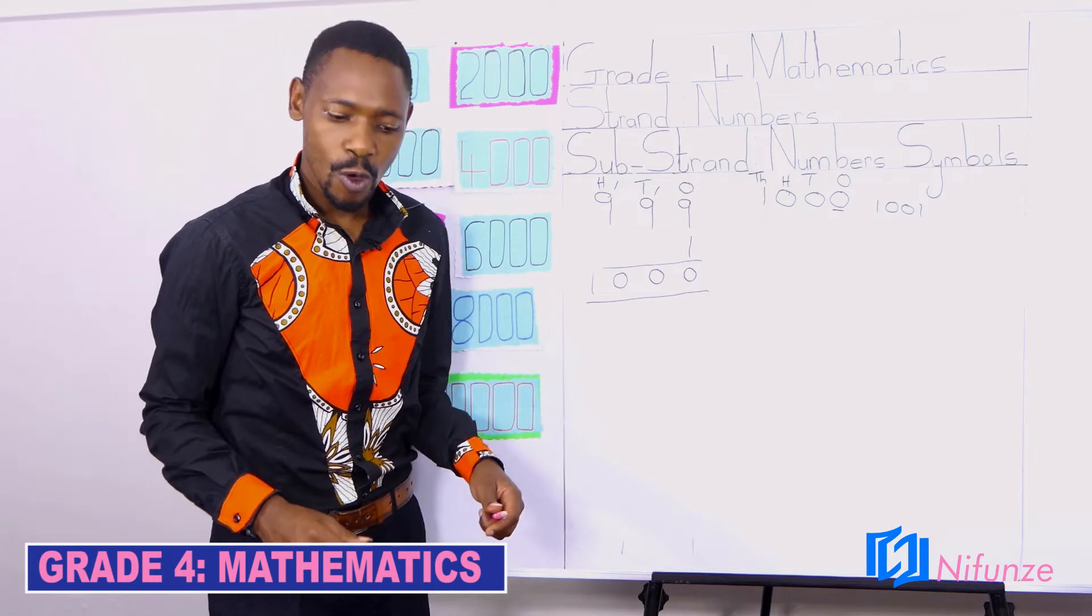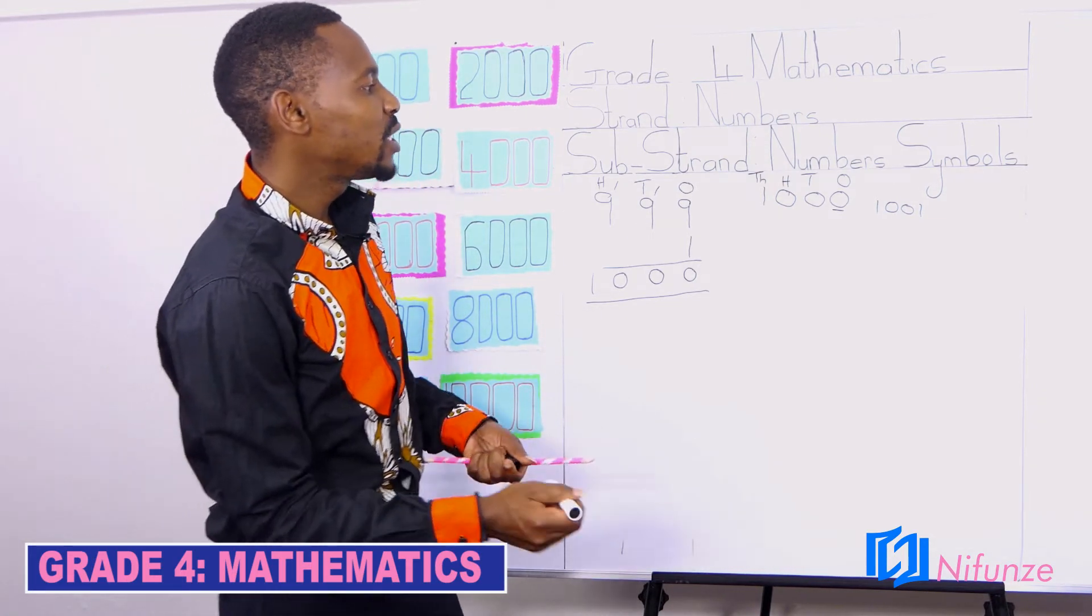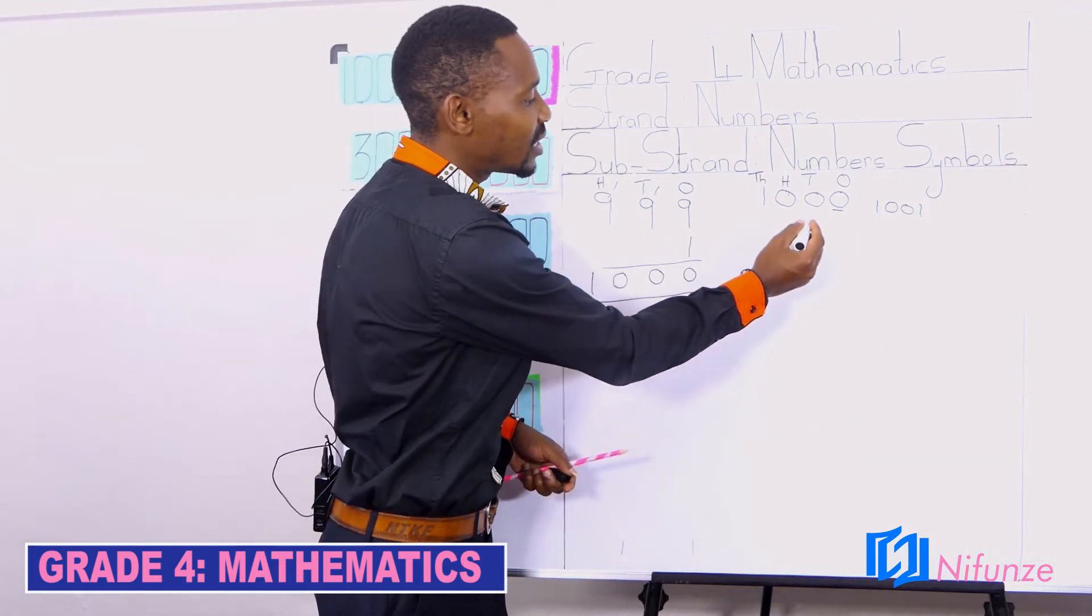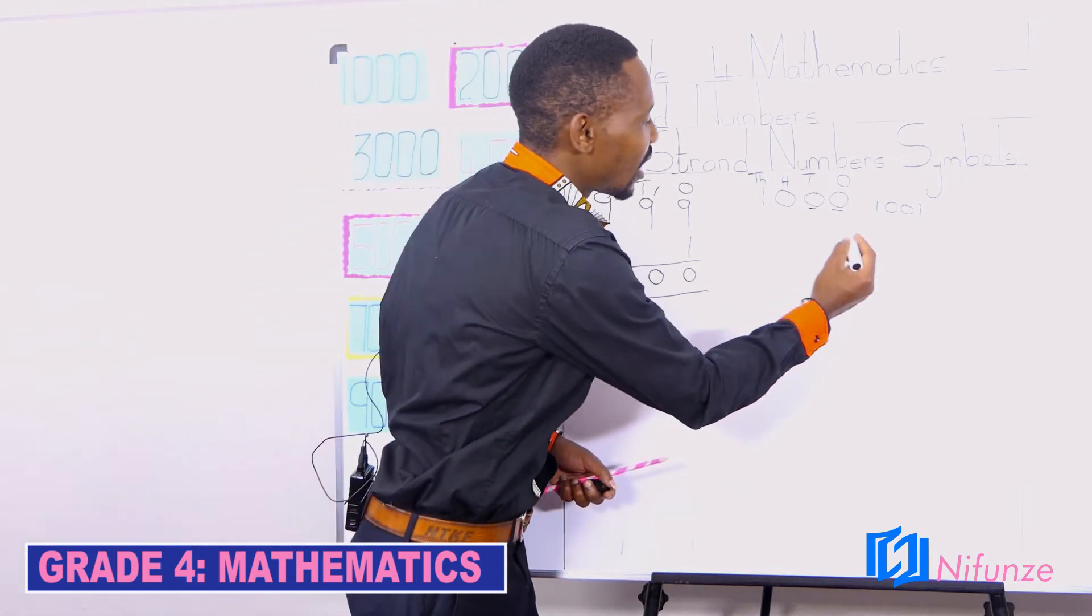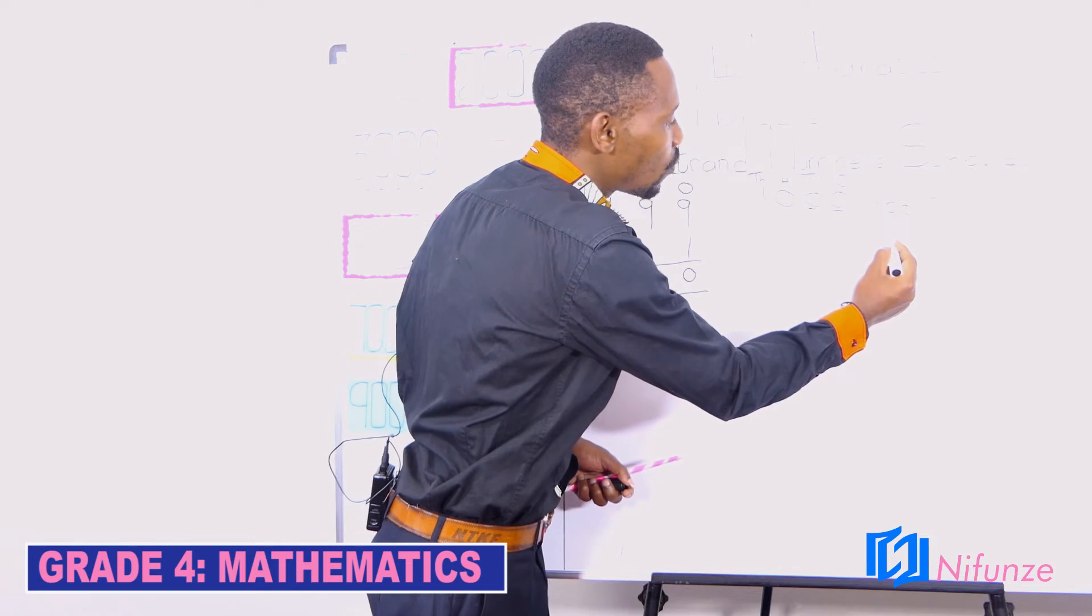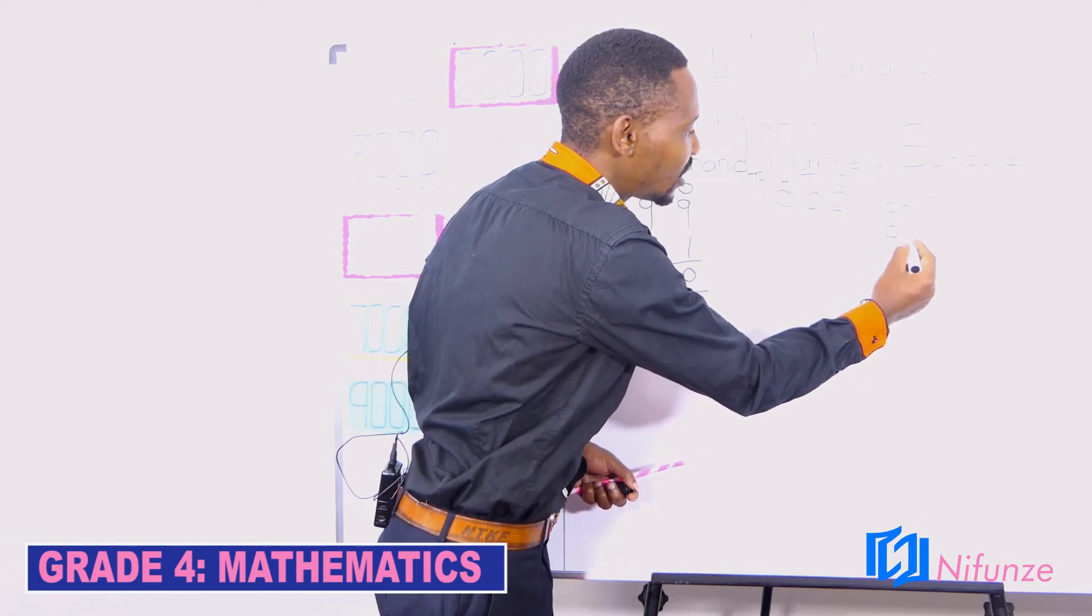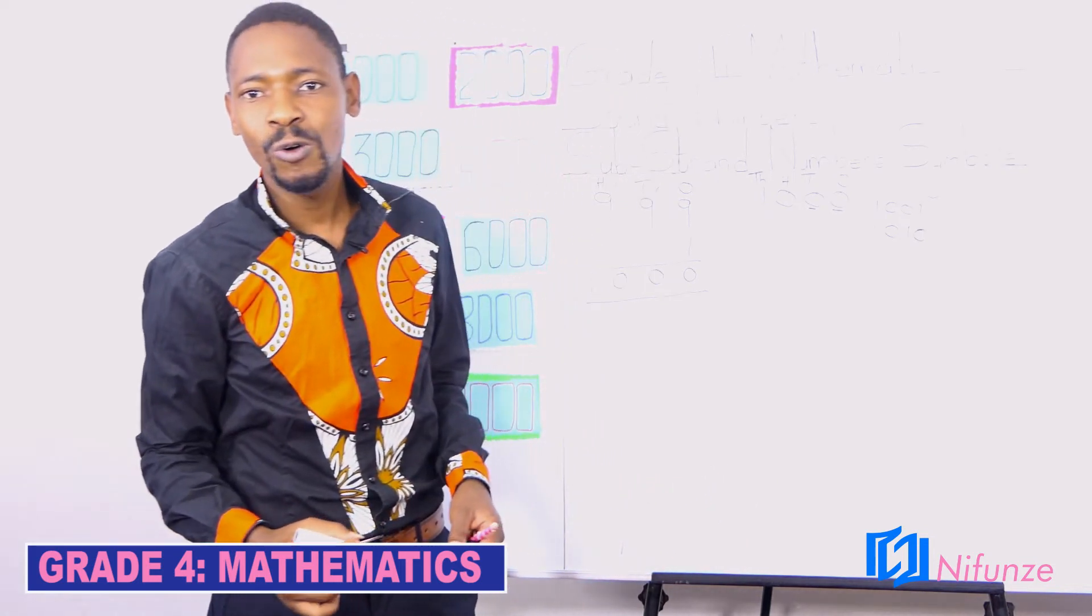Now, that means when you arrive to tens, the other zero which was in the place value of tens, now it is not going to continue to be zero. It is going to be one. So it is 1,000. You remove 0, then you put 10. That's what we call 1,010.